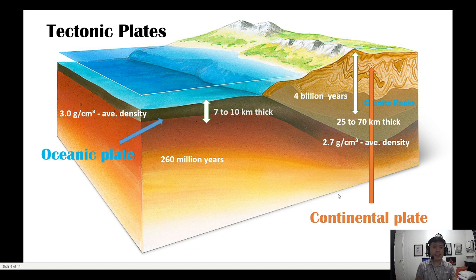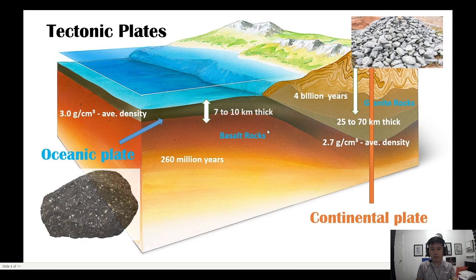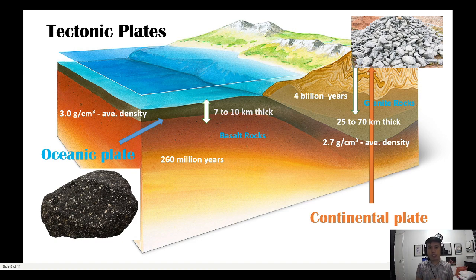Continental plates are mainly made of granite rocks — that's how granite rocks look. Oceanic plates are mainly made of basalt rocks. To summarize: continental plates are made of granite, and oceanic plates are made of basalt.